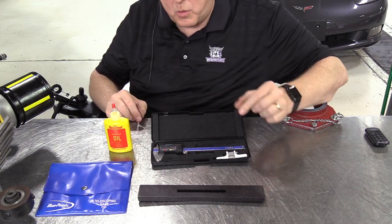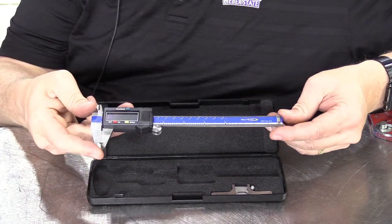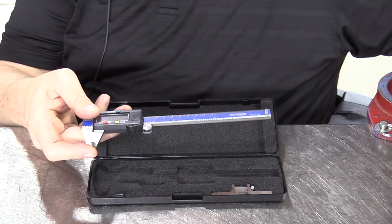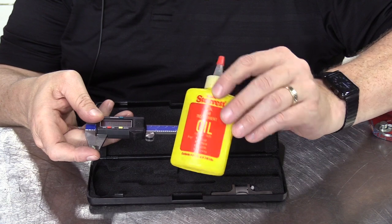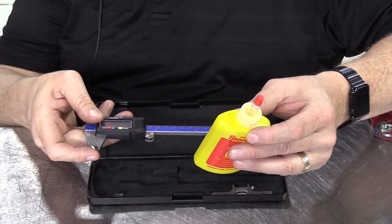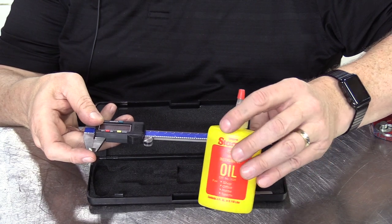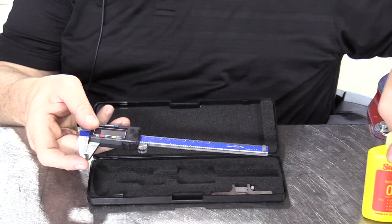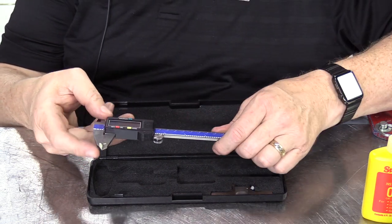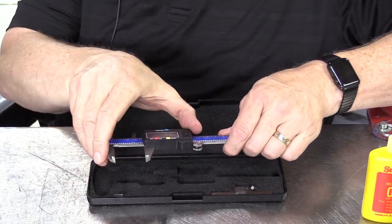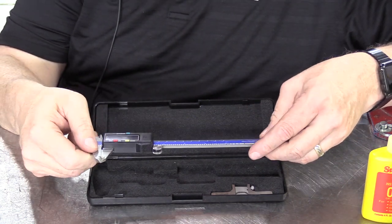This digital caliper needs to be treated with care and kept clean. There's some special oil from Starrett, it's just called tool and instrument oil. That's the same oil they use when they make the tools and lubricate all the internal parts, and we can use that on a paper towel to clean and lubricate parts of this digital caliper.